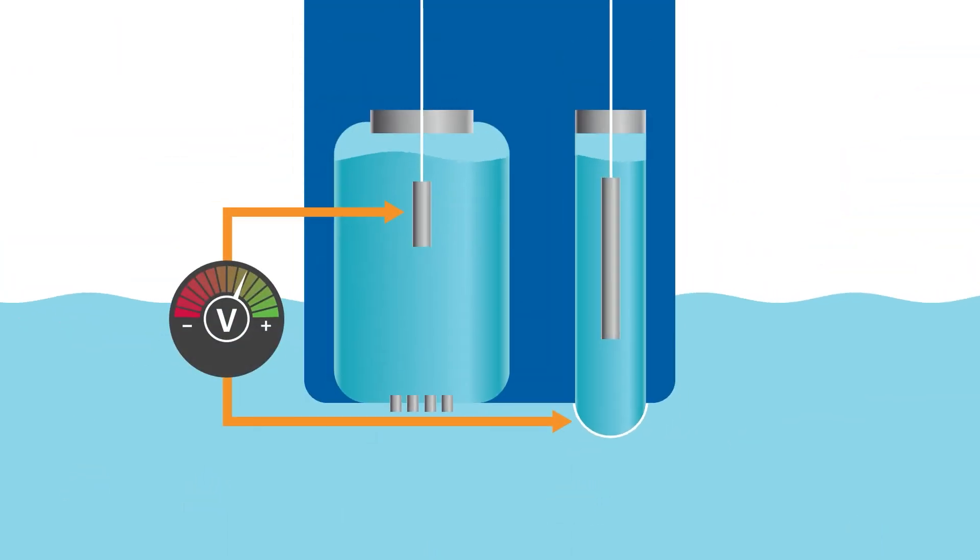The pH of the process fluid is calculated from the voltage difference between the pH sensitive electrode and the reference electrode.